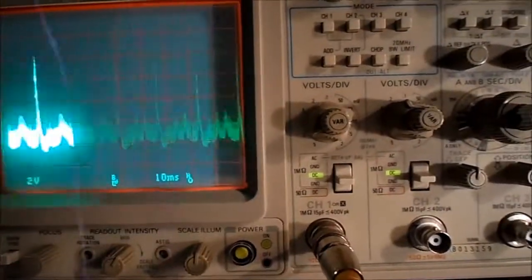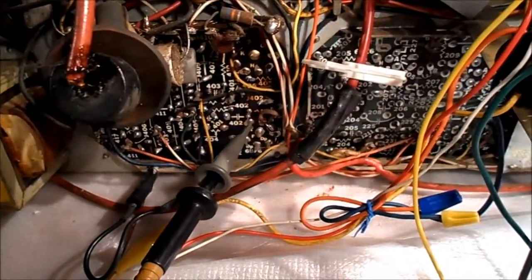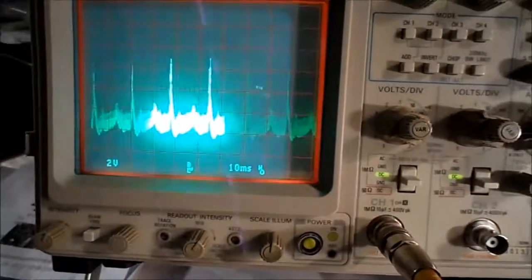And that's what I have on the scope. Now we're back on the grid of the vertical tube there. Let's test that tube next.